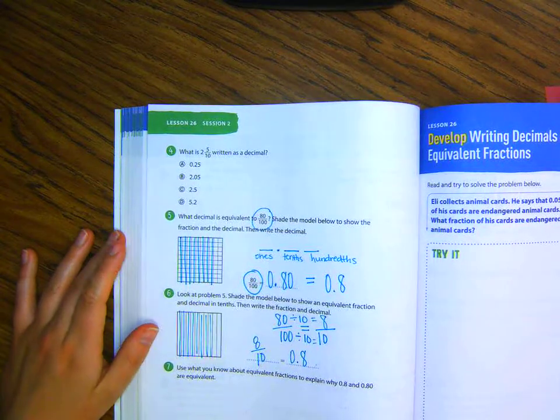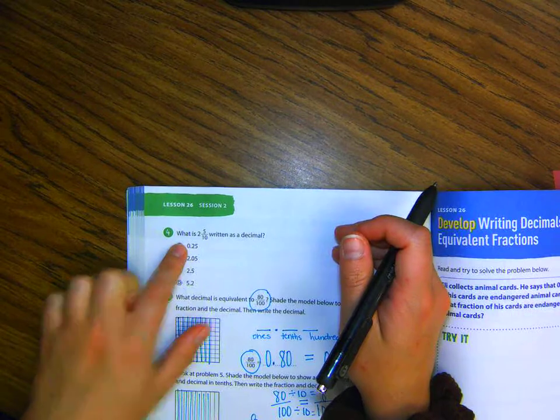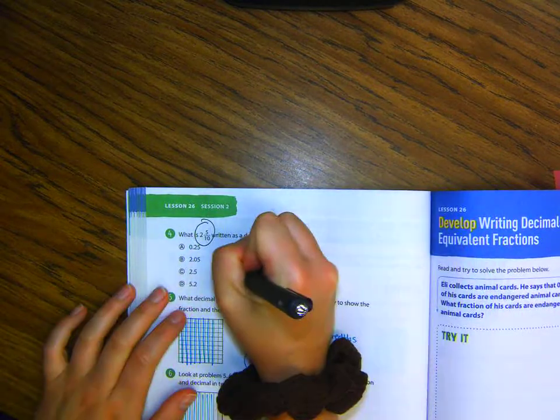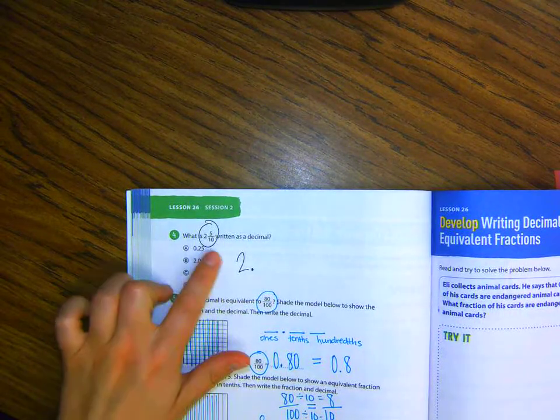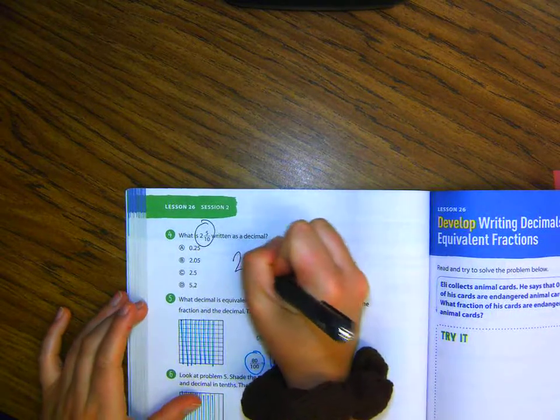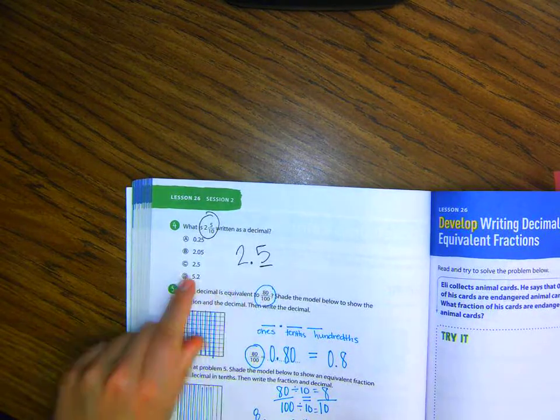And then number four on page 544. It says, what is two and five tenths written as a decimal? So, two is my whole number, so that goes to the left of the decimal point. And then five tenths, this is my tenths, so the five is where that goes. So, the correct one would be C.